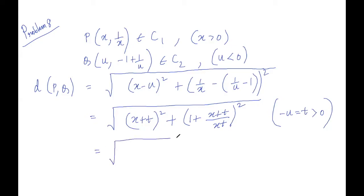So we have (x + t) squared plus (1 + (x + t)/(xt)) squared. And now we see that x plus t is in both the portions. So we take x plus t as a. So this is a squared plus (1 + a/b) squared, where x plus t equals a and xt equals b.